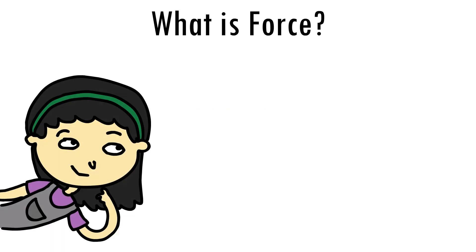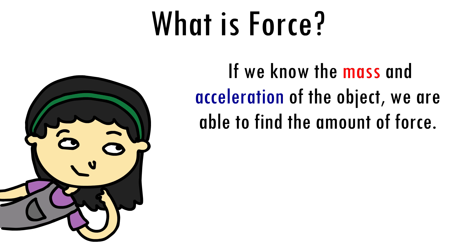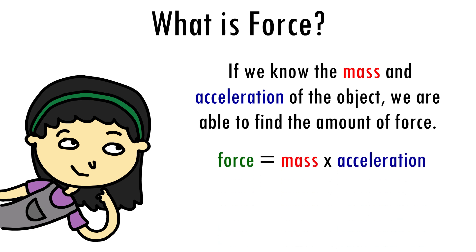There is a formula that scientists use to figure out the magnitude of the force used to act on an object. If we know the mass and acceleration of the object, we are able to find the amount of force. Therefore, mass times acceleration equals force. We can rewrite this as M times A equals F, where M means mass, A means acceleration, and F means force.